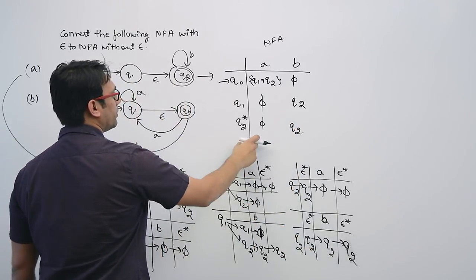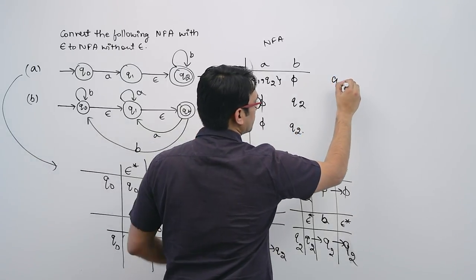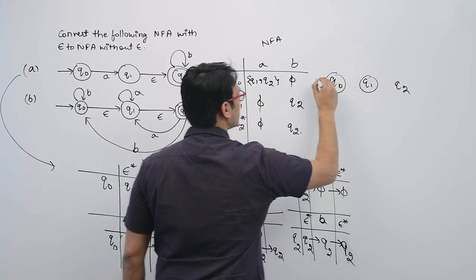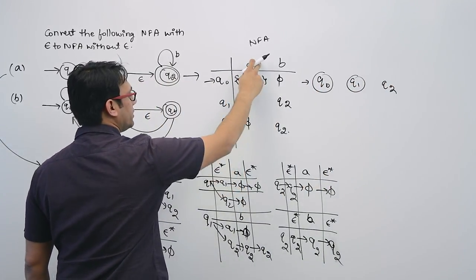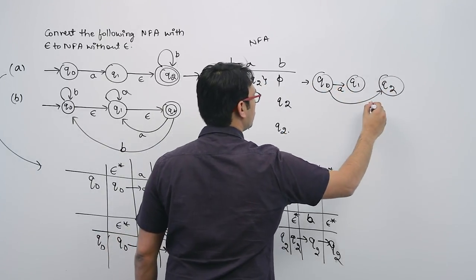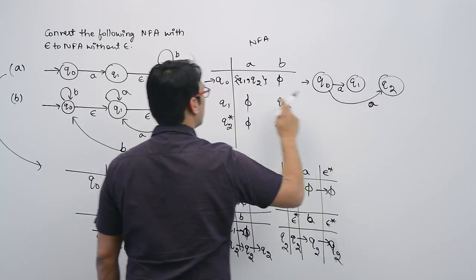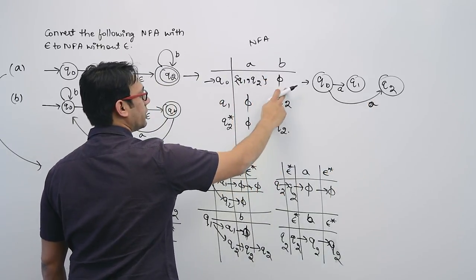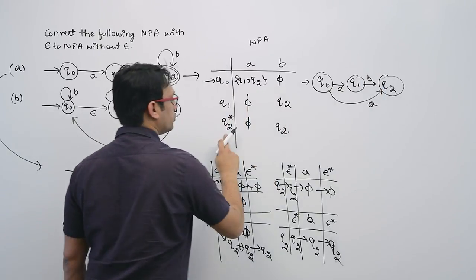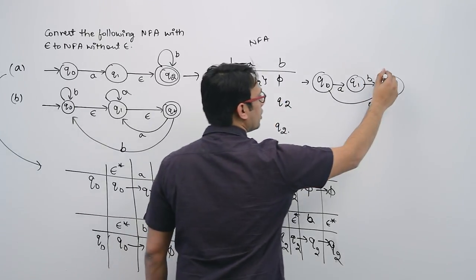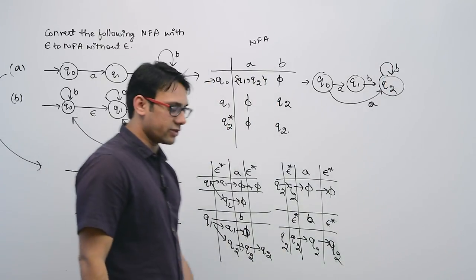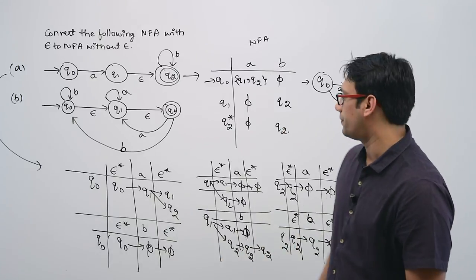On Q2: symbol A → phi; symbol B → Q2. So we can make an NFA containing three states Q0, Q1, and Q2. On Q0 by seeing symbol A we go to Q1 and Q2; on Q1 by seeing symbol B we go to Q2; on Q2 by seeing symbol B we go to Q2. This is the equivalent NFA, and then you can convert this NFA to a DFA.